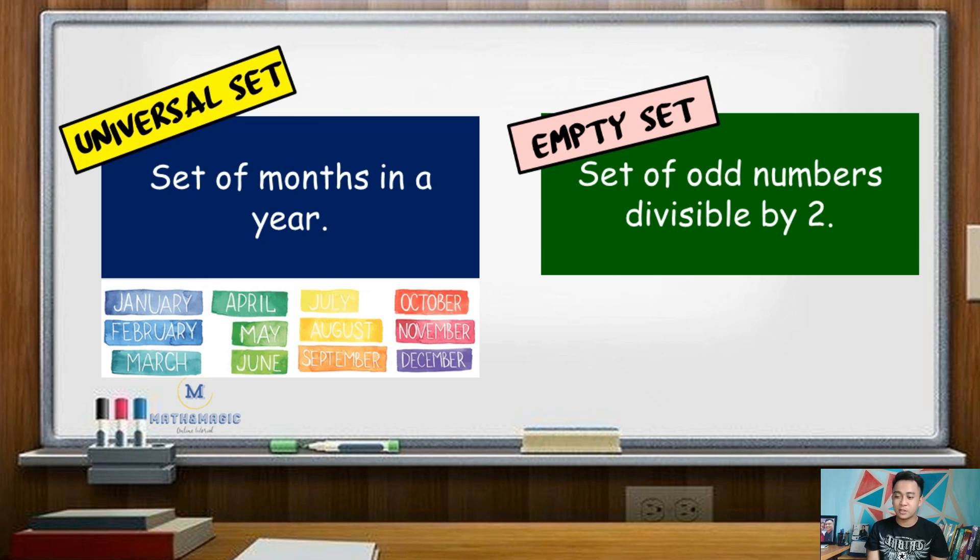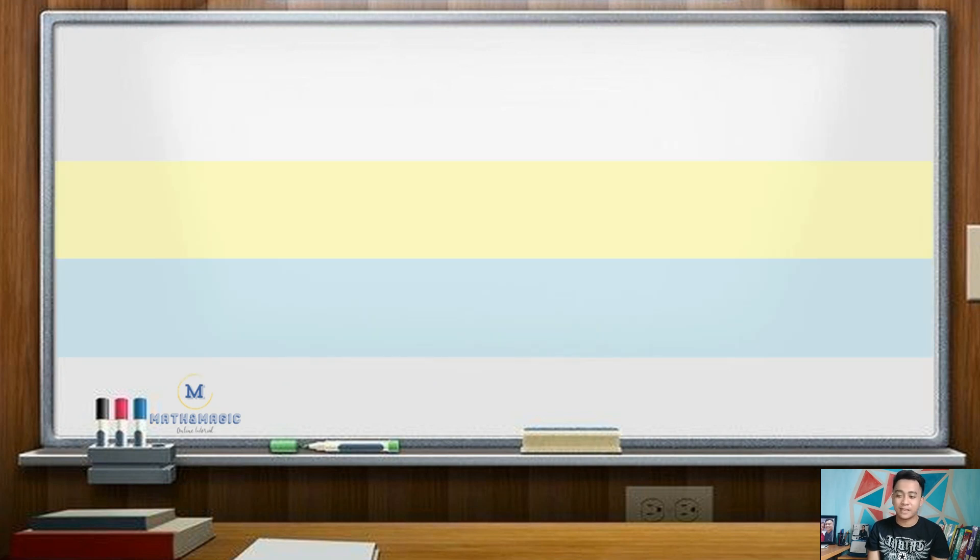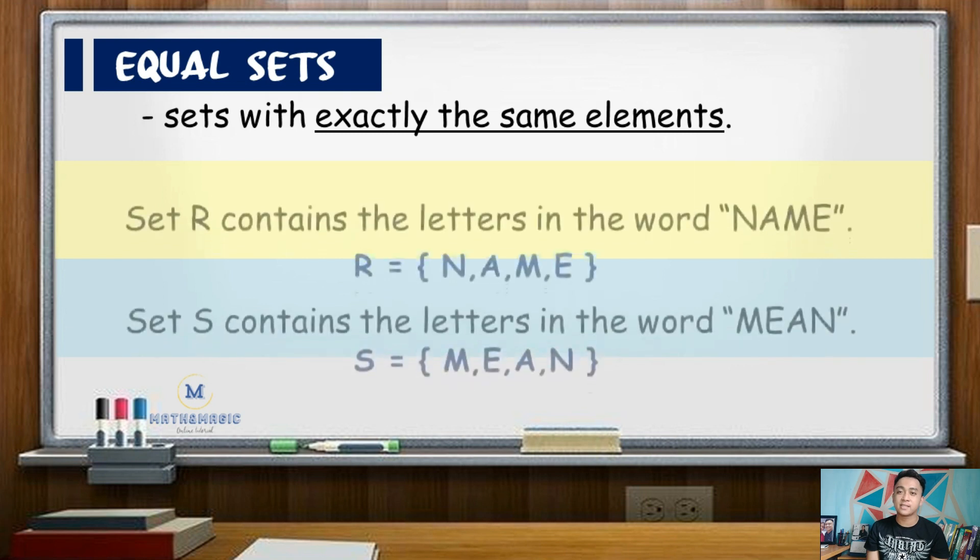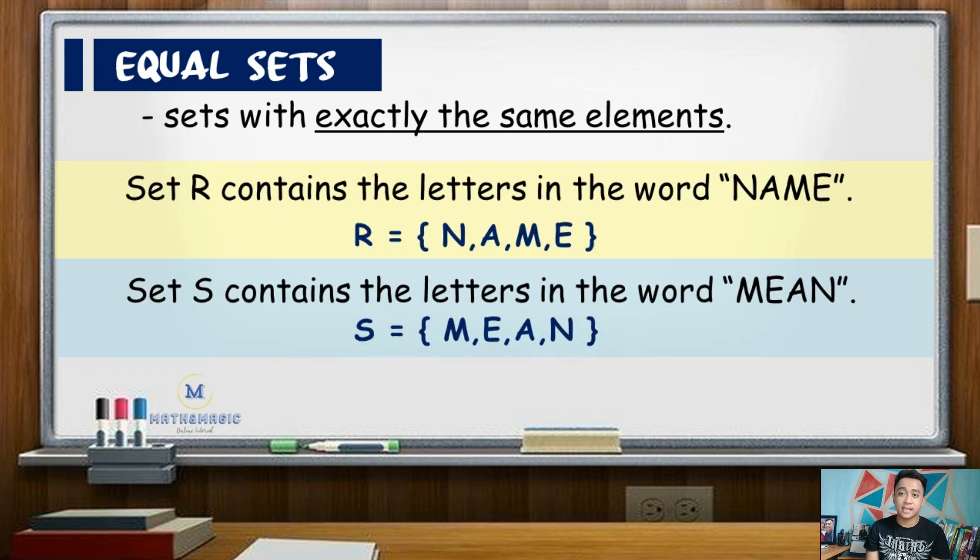After knowing what is universal set and null set, let us now proceed to equal and equivalent sets. Two sets are said to be equal if they have exactly the same elements, just like in the given sets R and S. Set R contains the elements in the word name, those are N-A-M-E, while set S contains the letters in the word mean, M-E-A-N. Notice that in these two sets, although the arrangement is different, the elements are exactly the same, so we consider this set as equal.